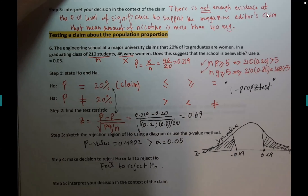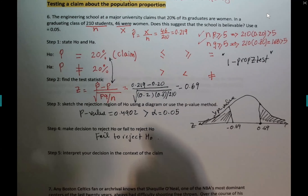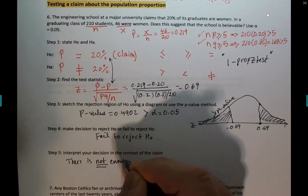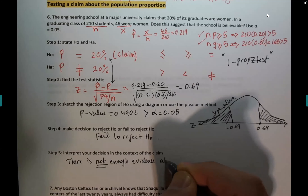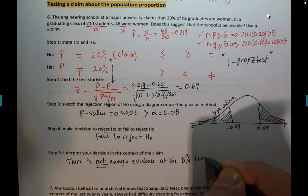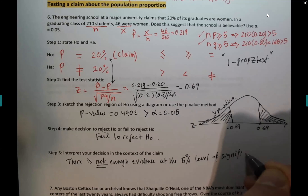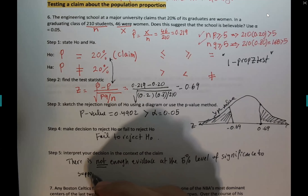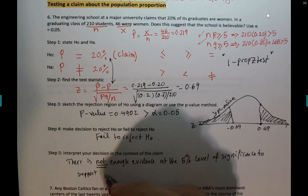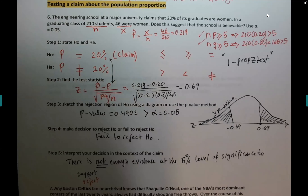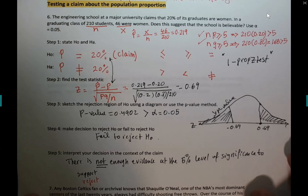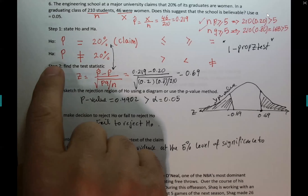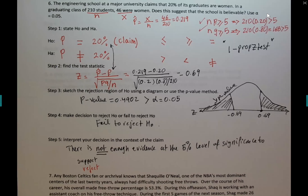Interpret the decision. Since we fail to reject H0, we start with: there is not enough evidence at the 5% level of significance. Now the claim is in H0 this time — not in HA — so which word? Not 'support' — it's 'reject.' There is not enough evidence to reject the claim of the engineering school that 20% of its graduates are women.